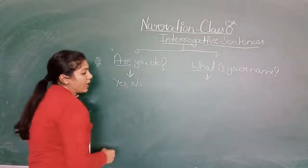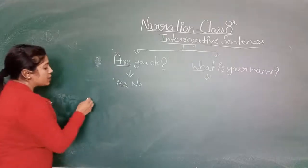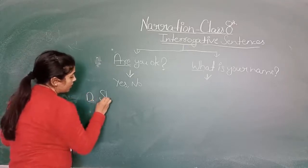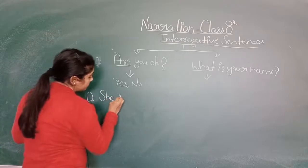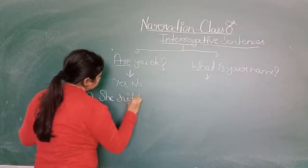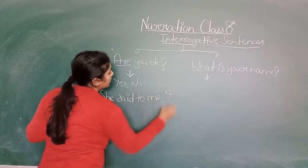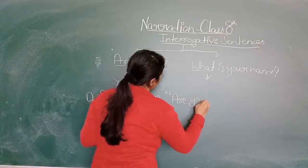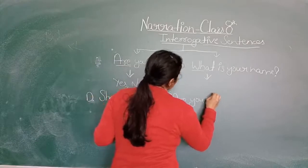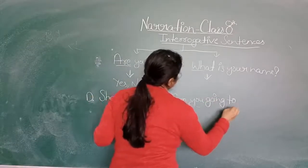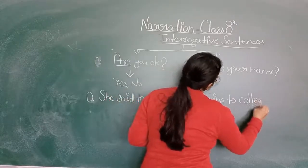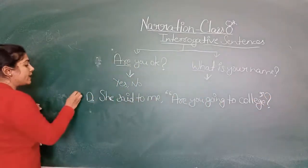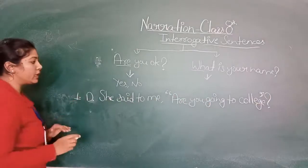Now when interrogative sentences come in direct speech, suppose an example is: 'She said to me — Are you going to college?' This is a direct speech example that I have given you so that you can get a clear understanding.